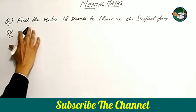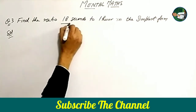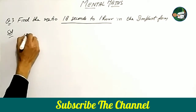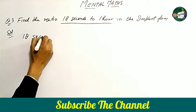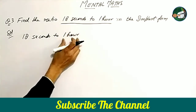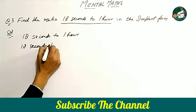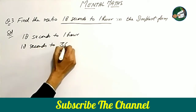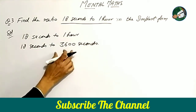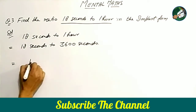Question number three: find the ratio of 18 seconds to one hour in the simplest form. We write 18 seconds to one hour. You know that one hour is equal to 3600 seconds, so we convert and write 18 seconds to 3600 seconds.